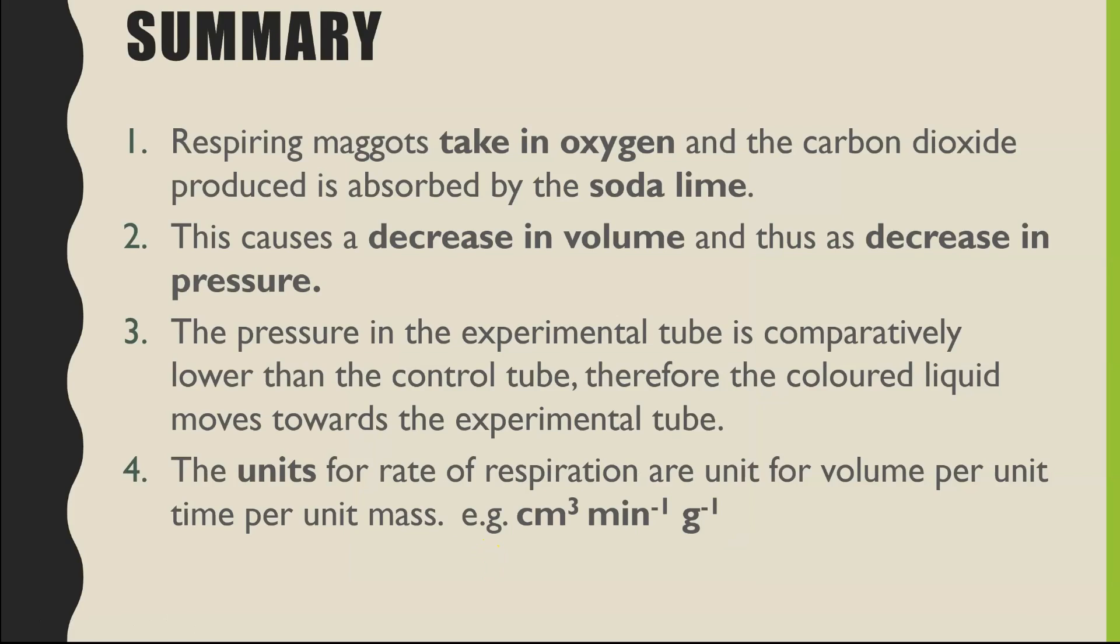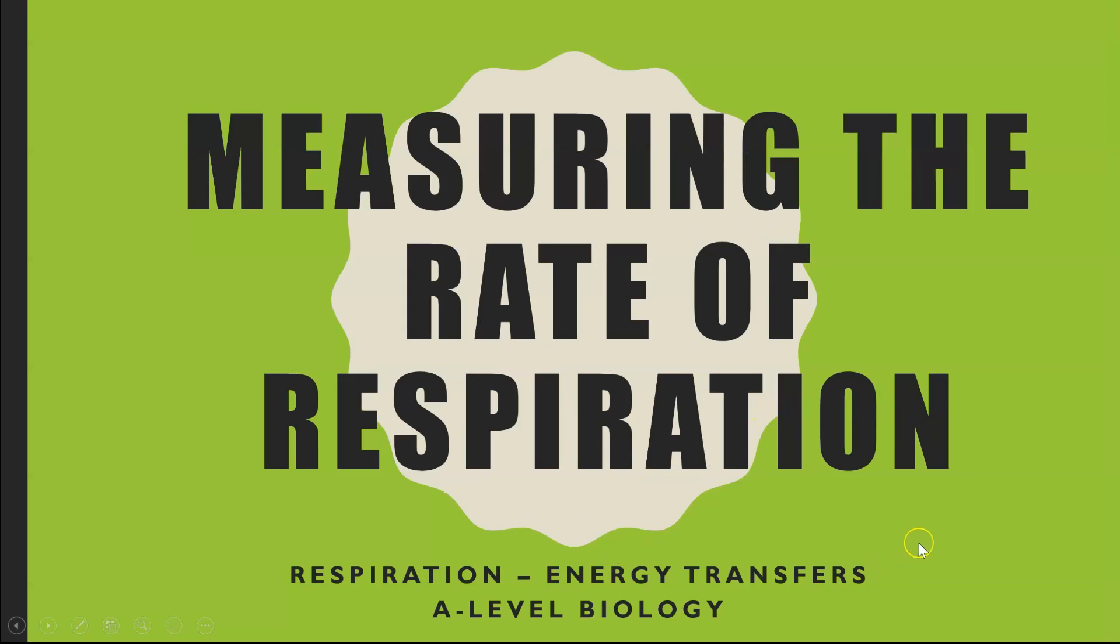So that is our respirometers, one of the ways to measure the rate of respiration. So just some of the key points to remember: the respiring maggots are taking in that oxygen for respiration. The carbon dioxide which is produced is equal to the volume of oxygen taken in, but it's absorbed by the soda lime. That then causes a decrease in volume of the gases and therefore a decrease in pressure of the gases in the experimental tube. Because we have that lower pressure in the experimental tube compared to the control tube, that forces the colored liquid to move towards the experimental tube. Last key point I put down was the units, because this is quite a common either two or three mark question: to know the units for rate of respiration. So centimeter cubed, or whichever unit of volume - the idea is it has to be cubed per unit time per unit mass.